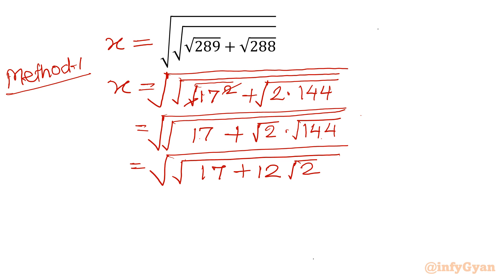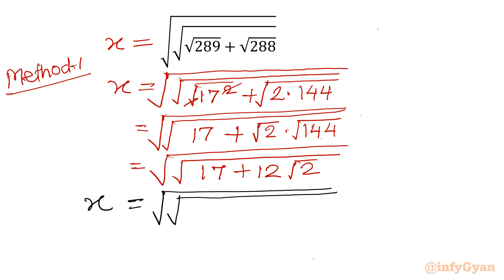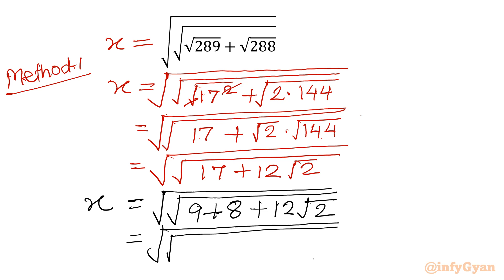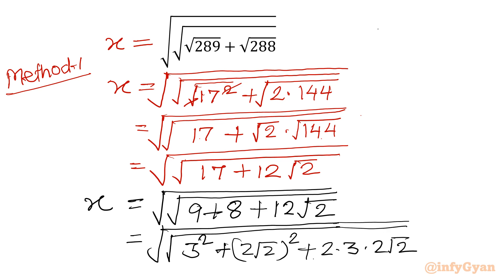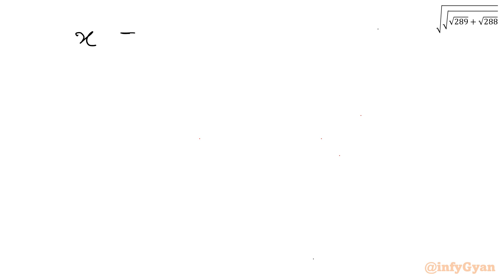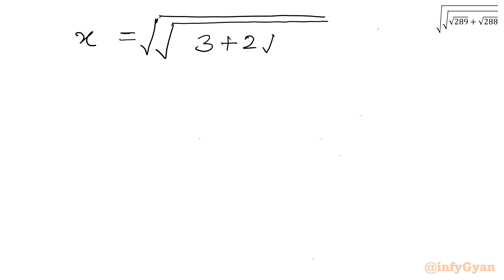Now I will use the split simplification method. I will write x equal to square root of square root of — 17 can be written as 9 plus 8 plus 12 root 2. Now 9 can be written as 3 squared, 8 can be written as (2 root 2) squared, and 12 root 2 is 2 times 3 times 2 root 2. This is the algebraic identity a squared plus b squared plus 2ab, so we can write it as (3 plus 2 root 2) whole squared.